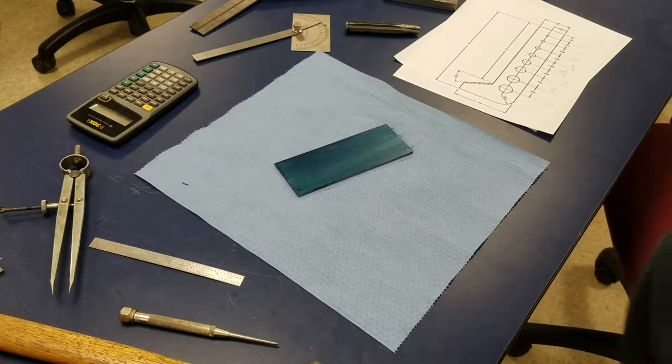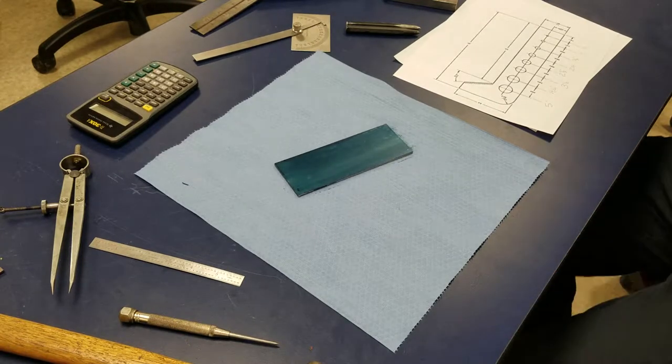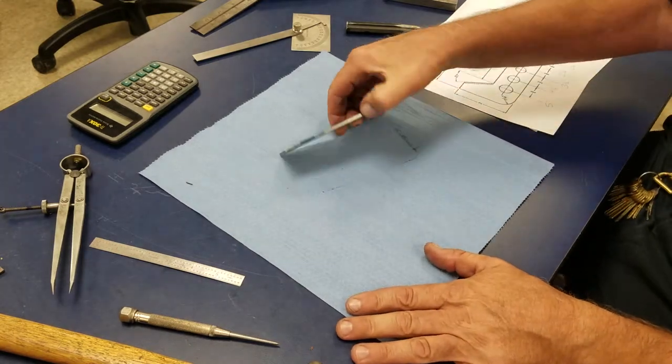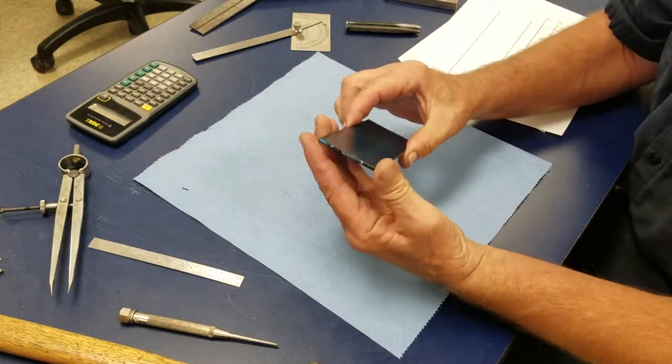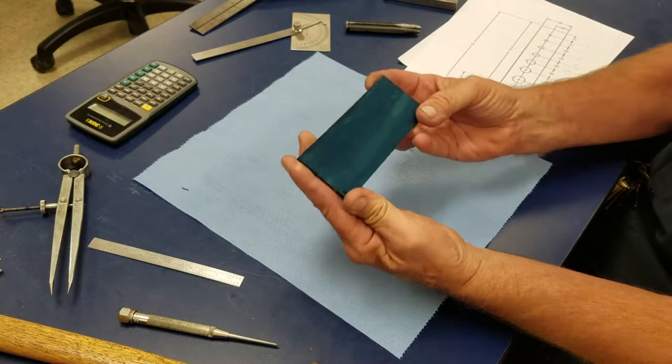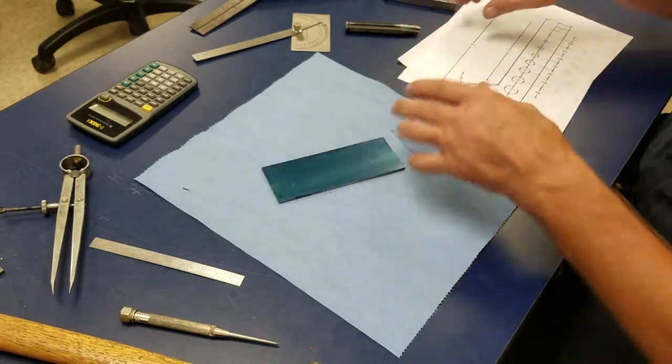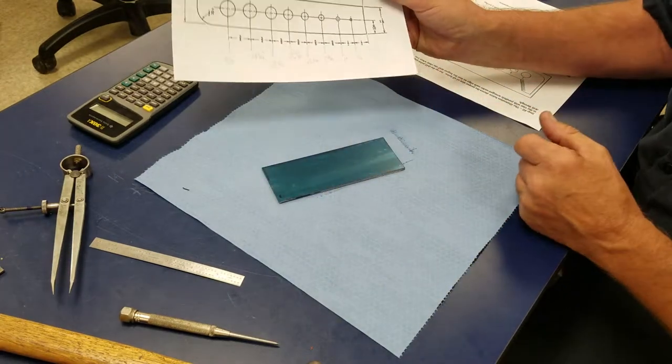Alright, I'm going to show you how to set up the drill point gauge. We start with a piece of 10 gauge stock, it's six inches by two inches, and you can see on the print that you get.